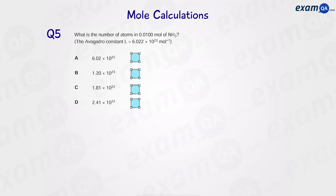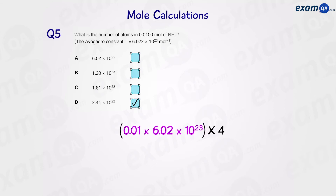Question 5: what is the number of atoms in 0.01 moles of ammonia? This question is very similar to the previous one. The correct answer is D. The way you should have gotten that is by working out the number of molecules of ammonia first — which is moles times Avogadro's constant — then timesing it by 4 to work out number of atoms, since there are 4 atoms in one molecule of ammonia.